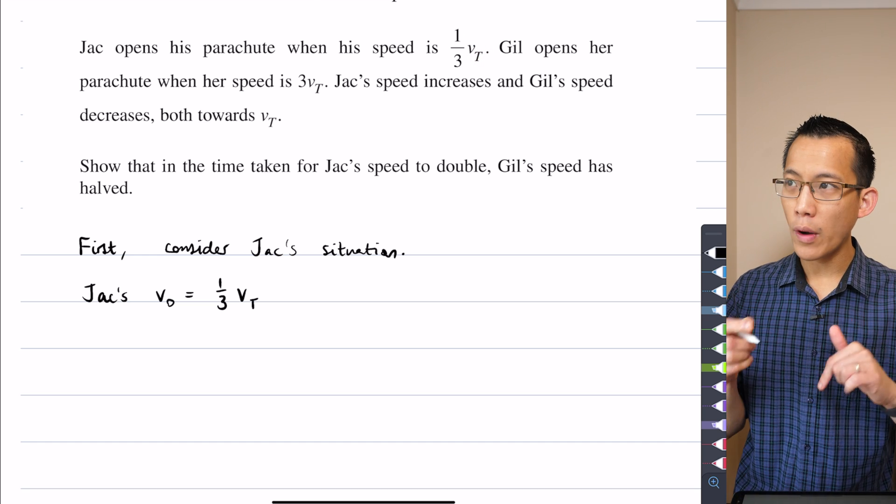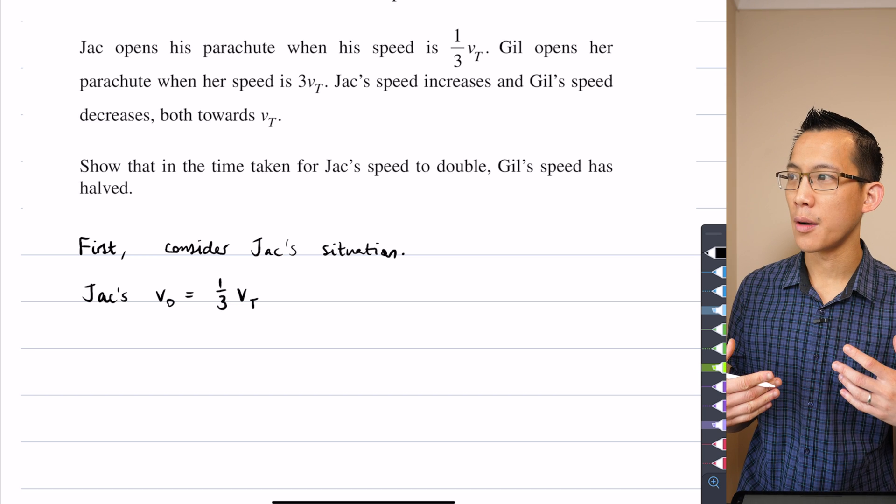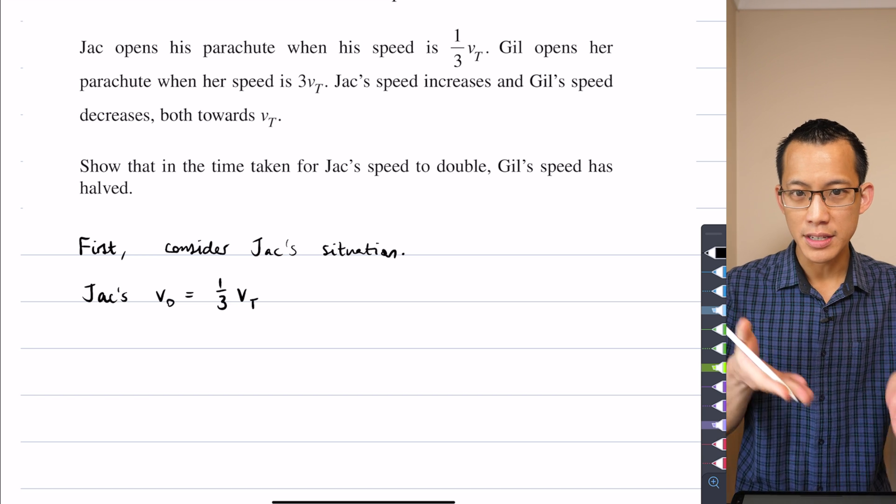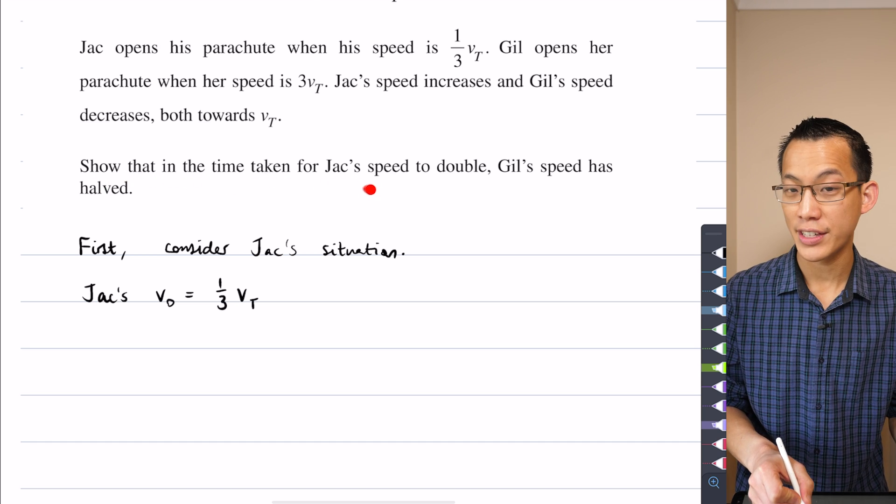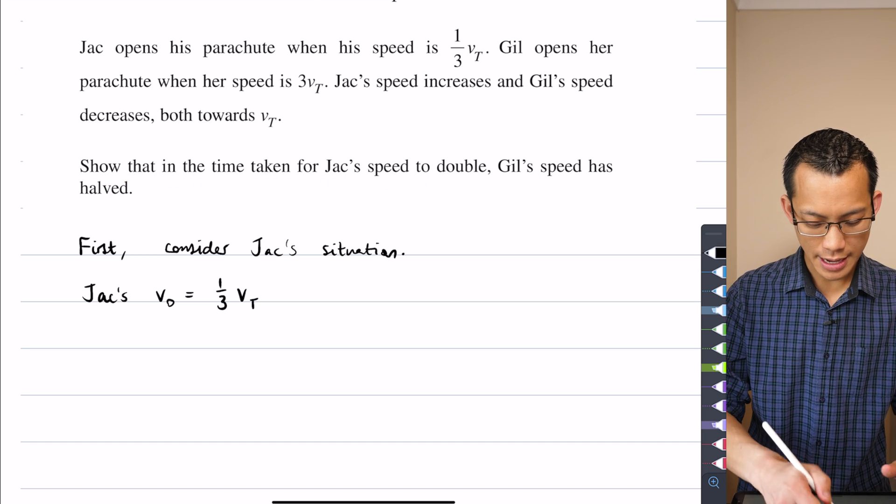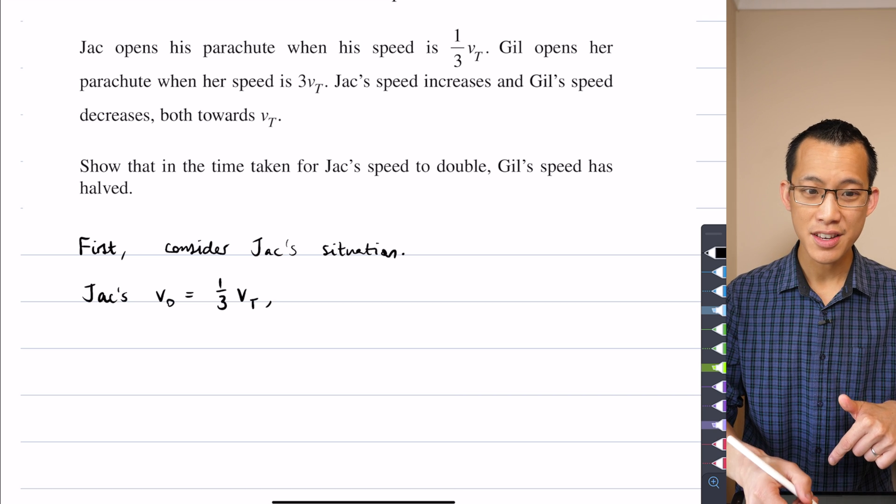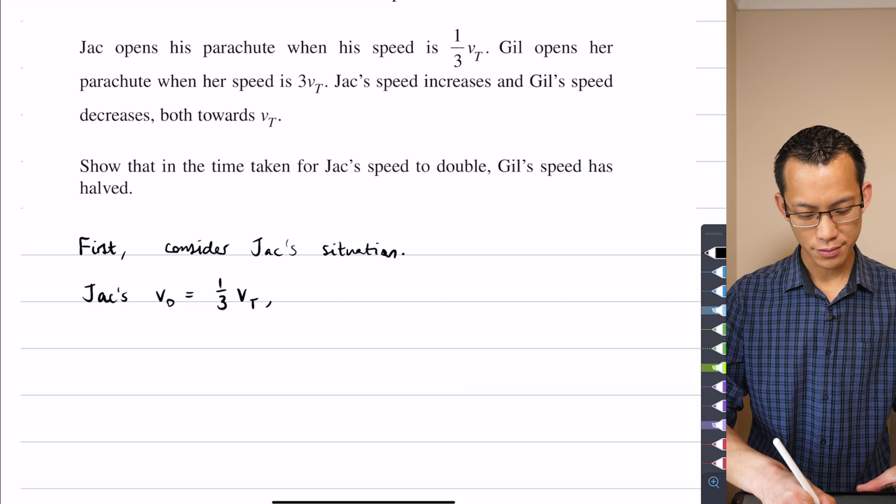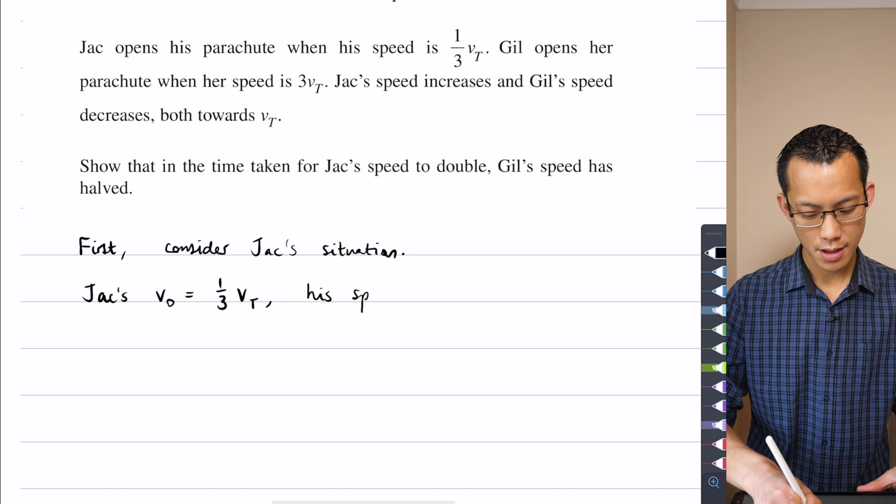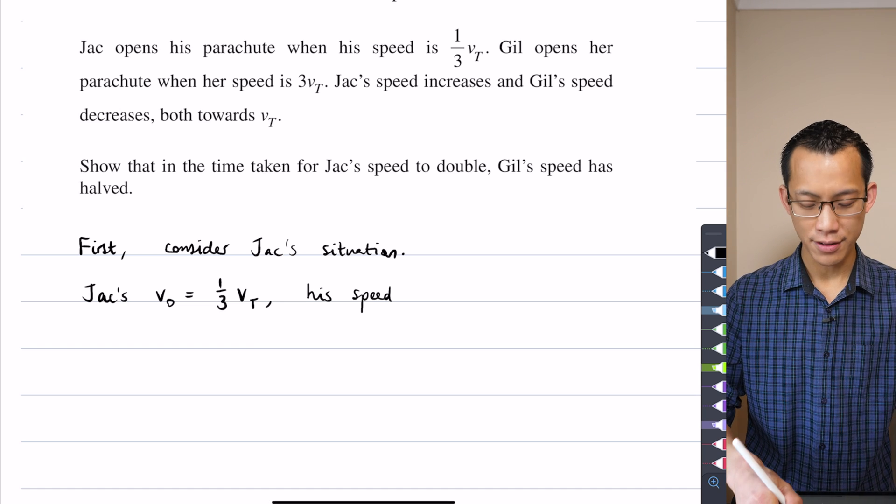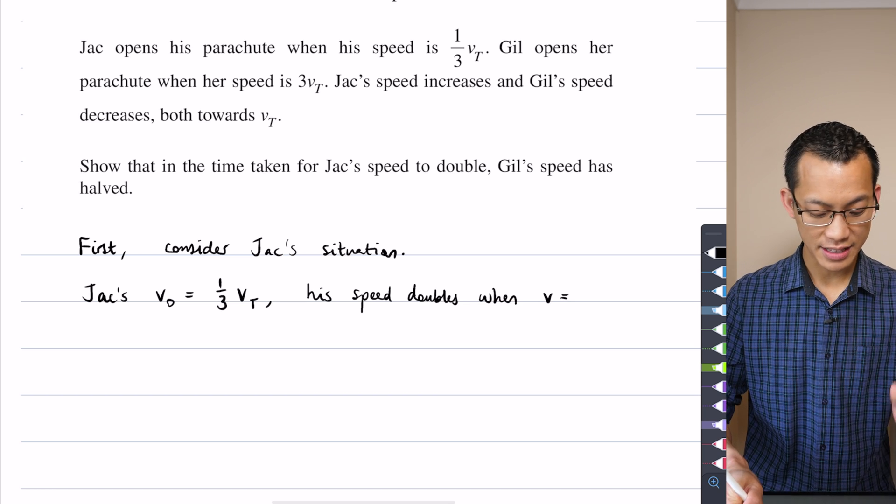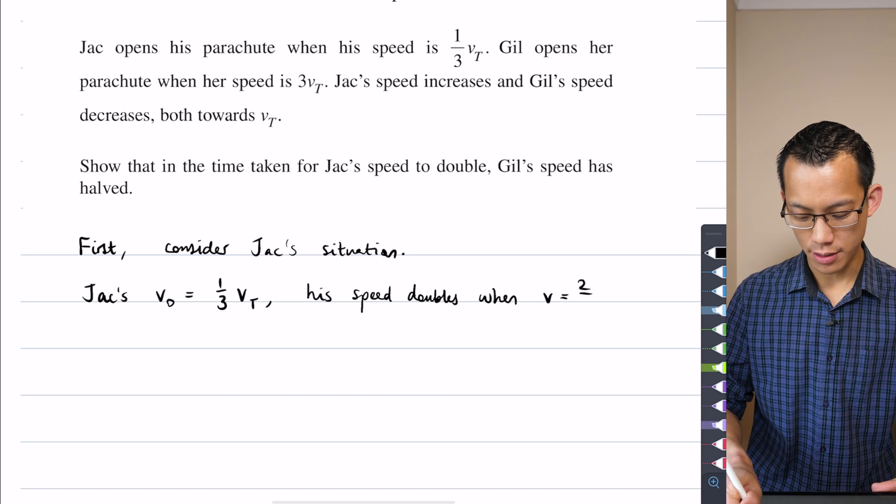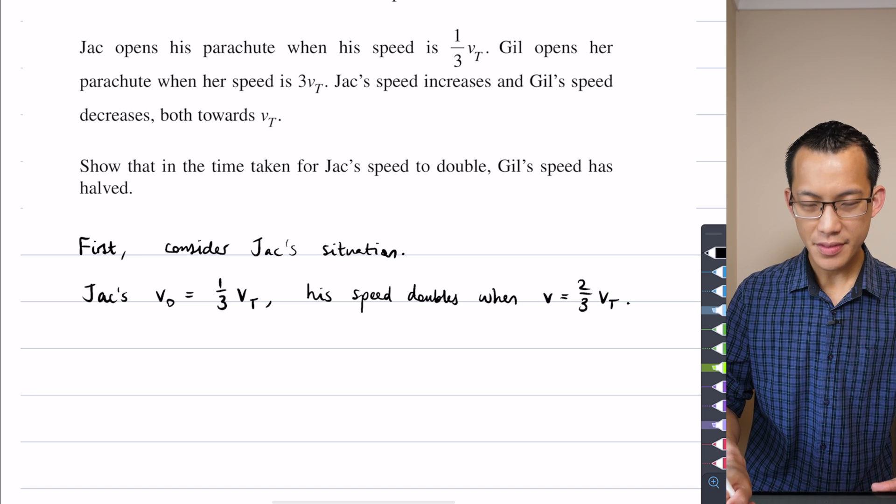So when does his velocity equal once it doubles that? Because that's the question it's asking me, show that the time taken for Jack's speed to double. So I'm gonna say since this is his V0, his speed doubles when he reaches double of that value. His speed doubles when V equals, instead of one-third of VT, it'll be two-thirds of VT.